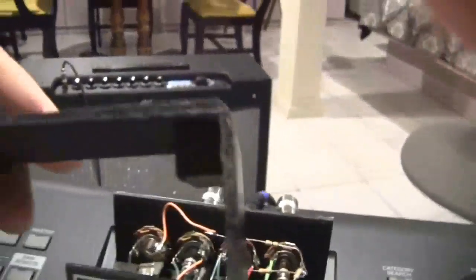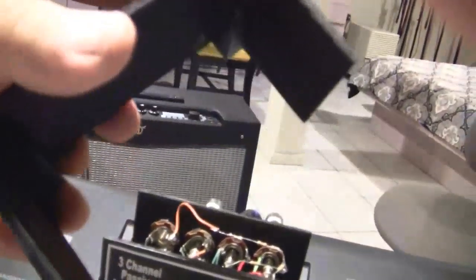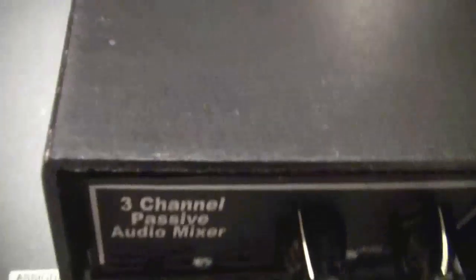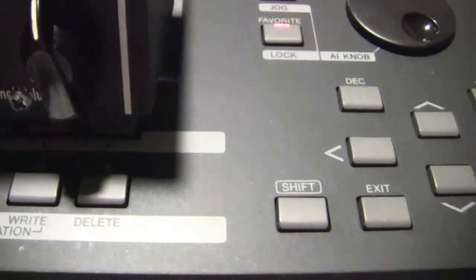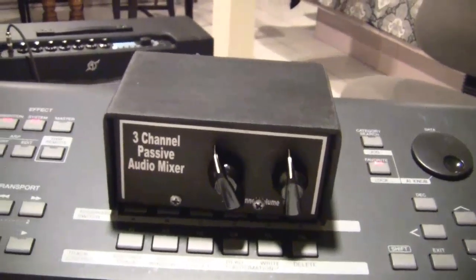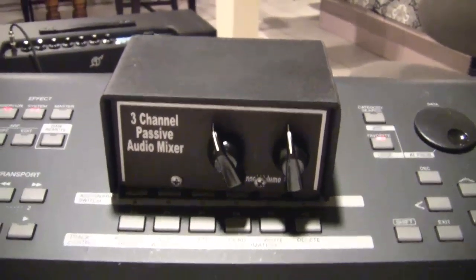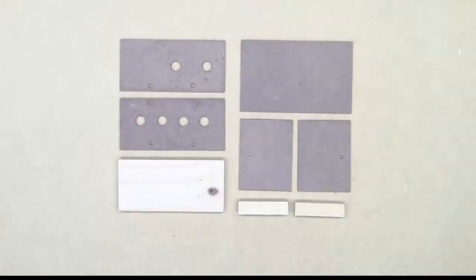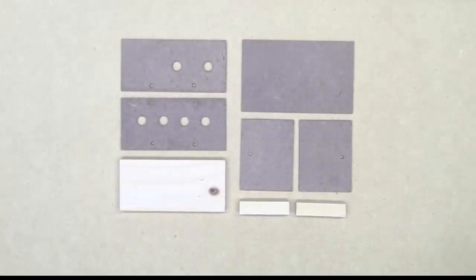In addition to that is the case. This is what I call a clamshell case. It has a top that's sort of like a U, a long U, and the bottom which is sort of like a short U. One just fits over the other and goes together with a screw on either side. It's a nice way of making a case for little projects. I'm going to show you how to make that and how to build this three-channel passive audio mixer.